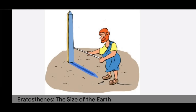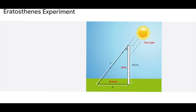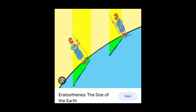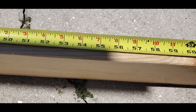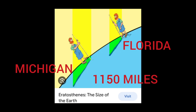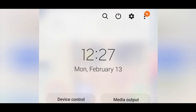Okay, so we decided to do our own Eratosthenes experiment by triangulating the sun in two different locations. So we made our own right angle triangles so we can measure the shadow to come up with the angle to the sun. We did one in Florida and we did one in Michigan, 1,150 miles apart. We both took our measurements at the exact same time: 12:27, February 13th.